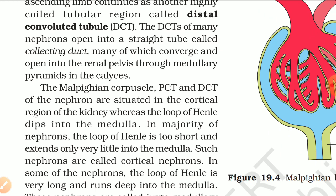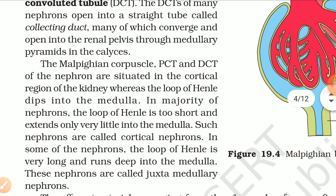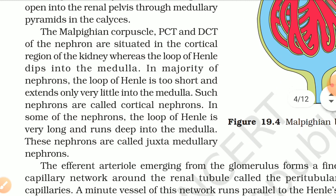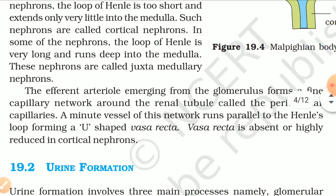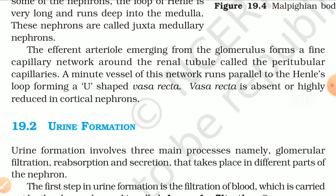The Malpighian corpuscle, PCT, and DCT of the nephron are situated in the cortical region of the kidney, whereas the loop of Henle dips into the medulla. In majority of nephrons, the loop of Henle is too short and extends only very little into the medulla — these are called cortical nephrons. In some nephrons, the loop of Henle is very long and runs deep into the medulla — these are called juxtamedullary nephrons. The efferent arteriole emerging from the glomerulus forms a fine capillary network around the renal tubule called the peritubular capillaries. A minor vessel of this network runs parallel to Henle's loop forming a U-shaped vasa recta. Vasa recta is absent or highly reduced in cortical nephrons.